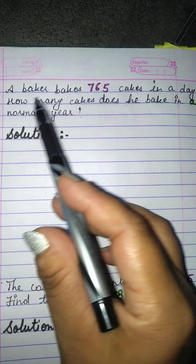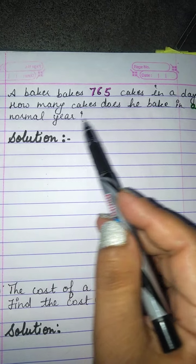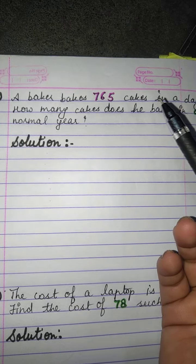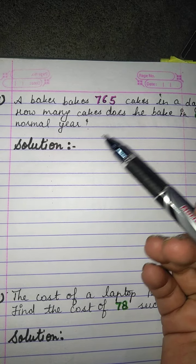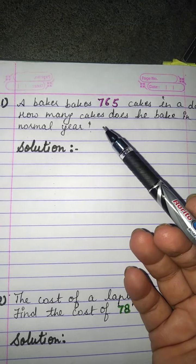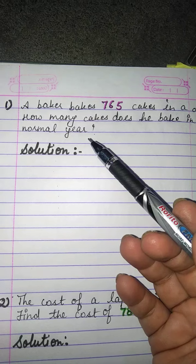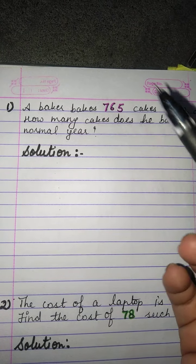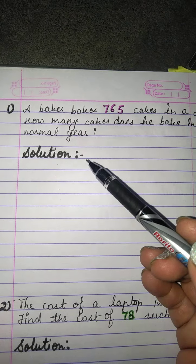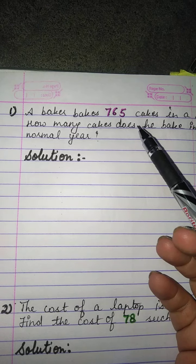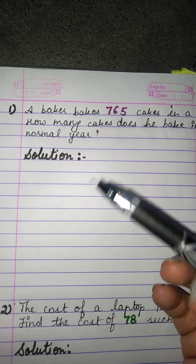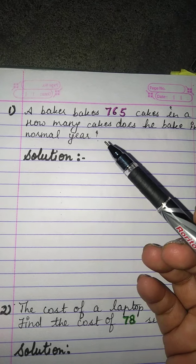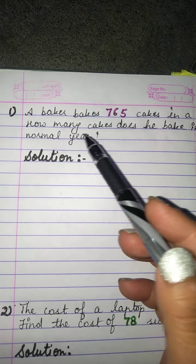How many cakes does he bake in a normal year? When you read this question, how do you get to know that you have to multiply? Because in this problem, the detail of one day is given.